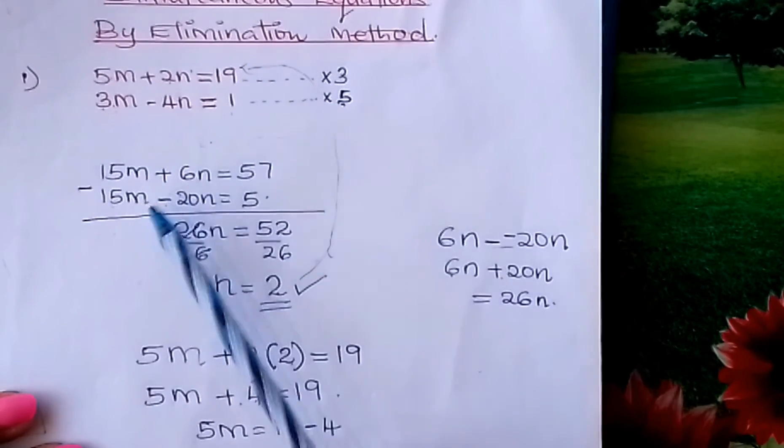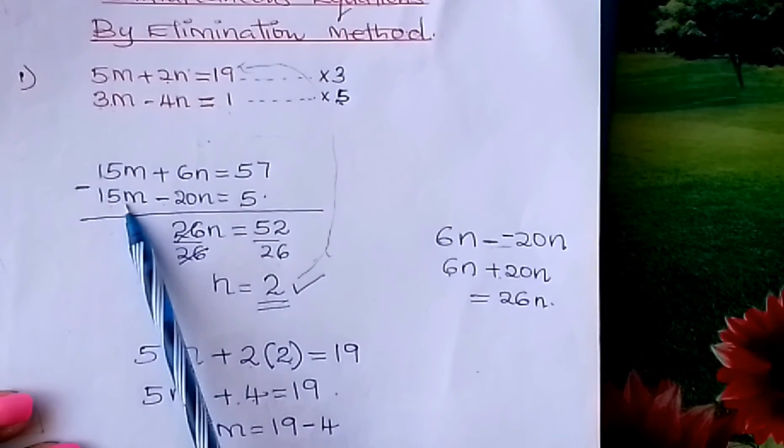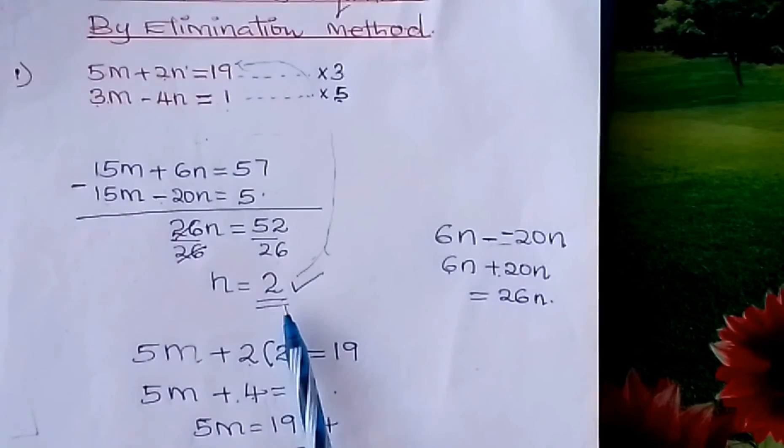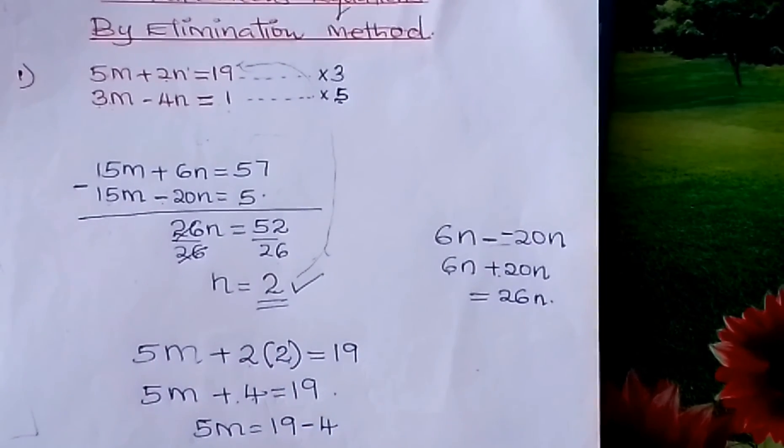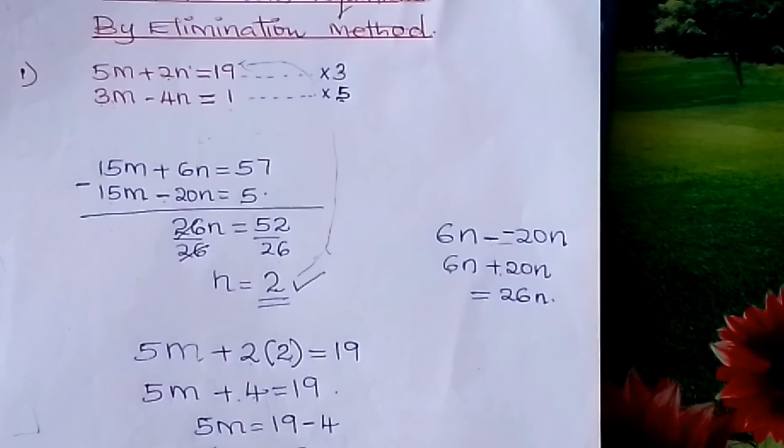You multiply every term with those figures. You get two equations there. Then you eliminate your M by subtracting. You follow down correctly until you get to the end. Otherwise, go and practice. Thank you.